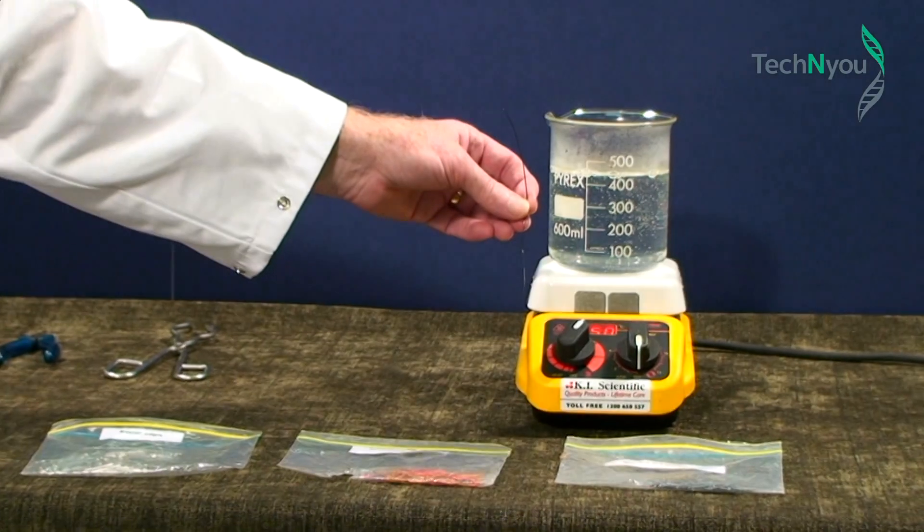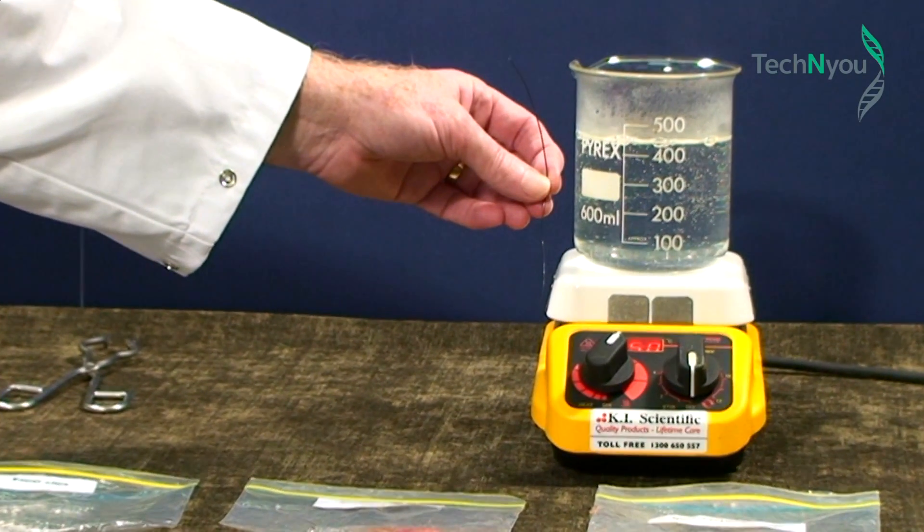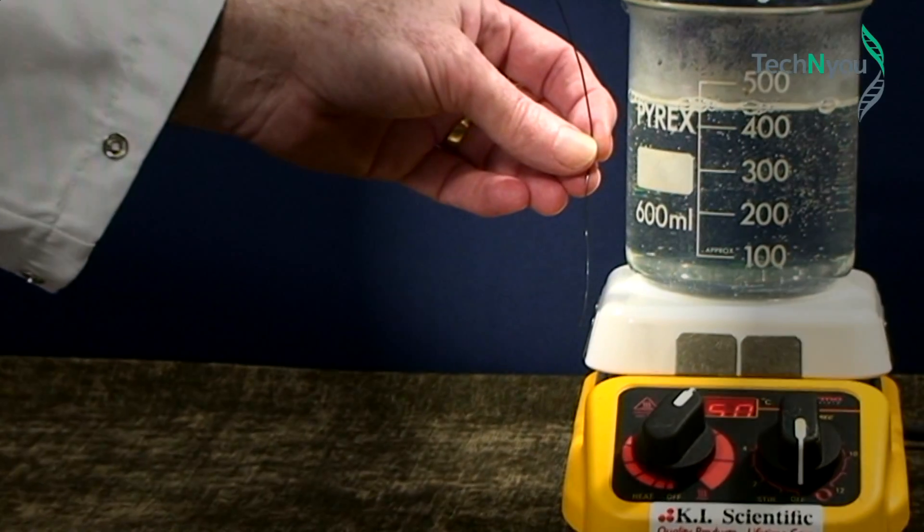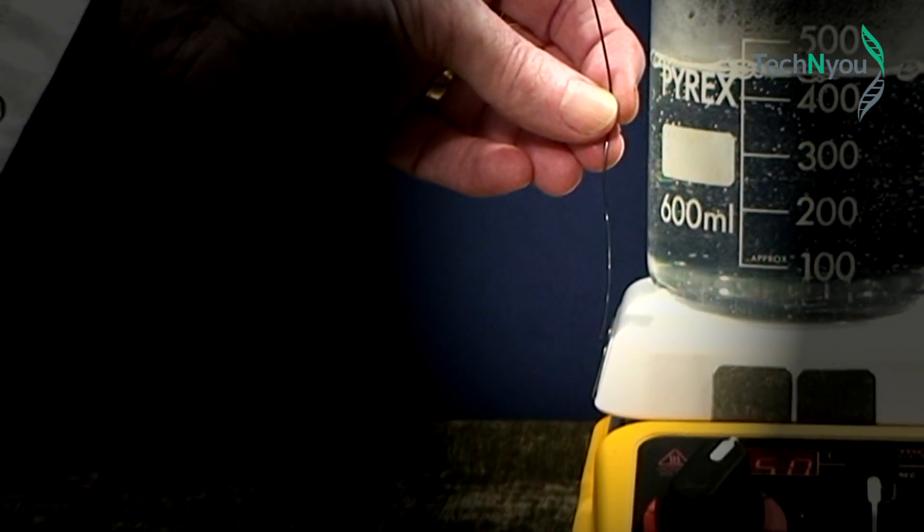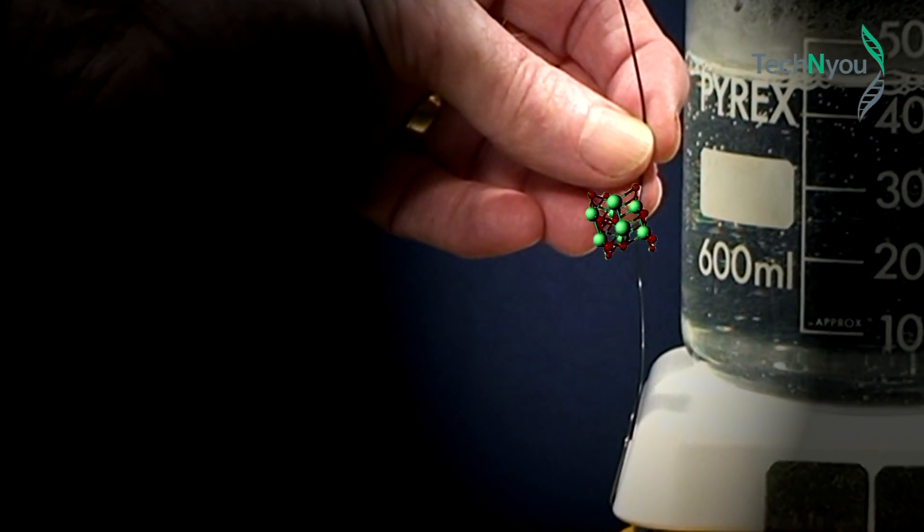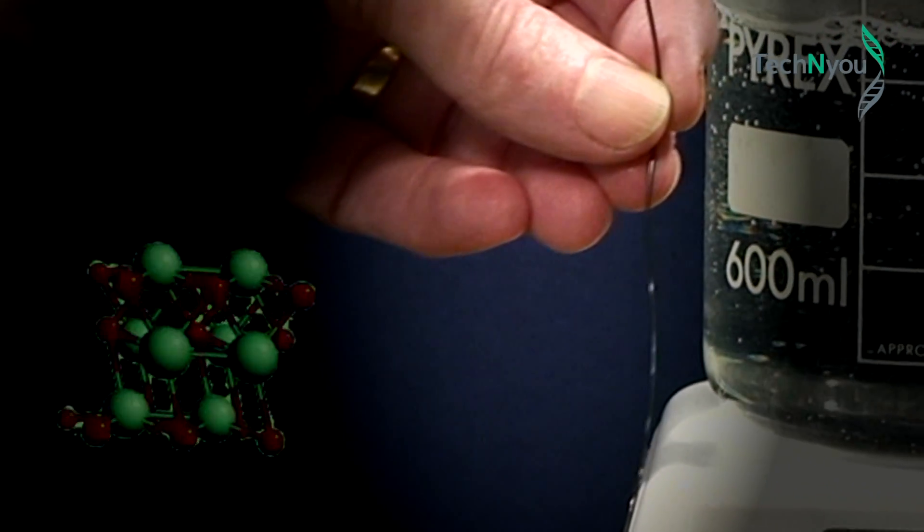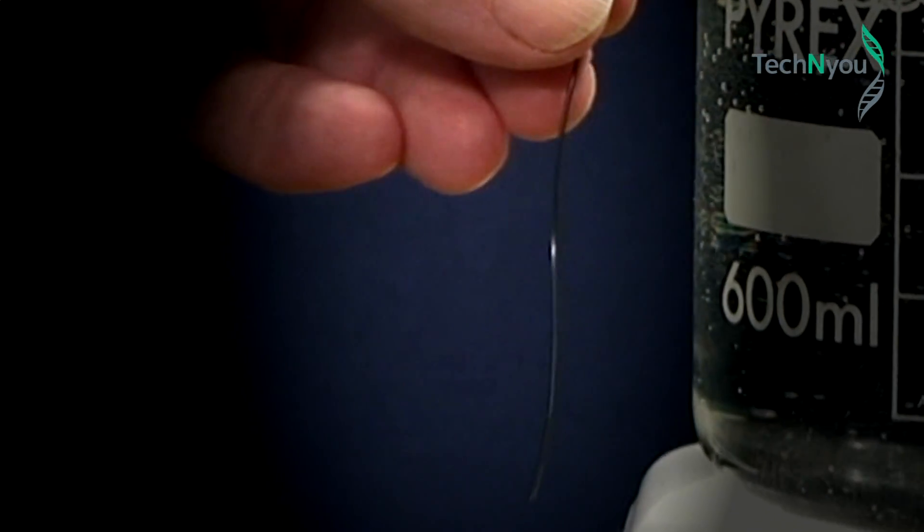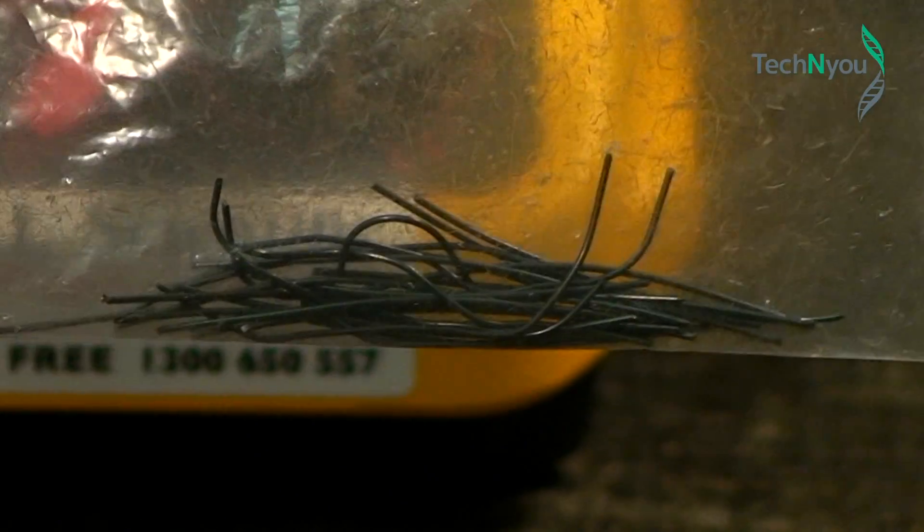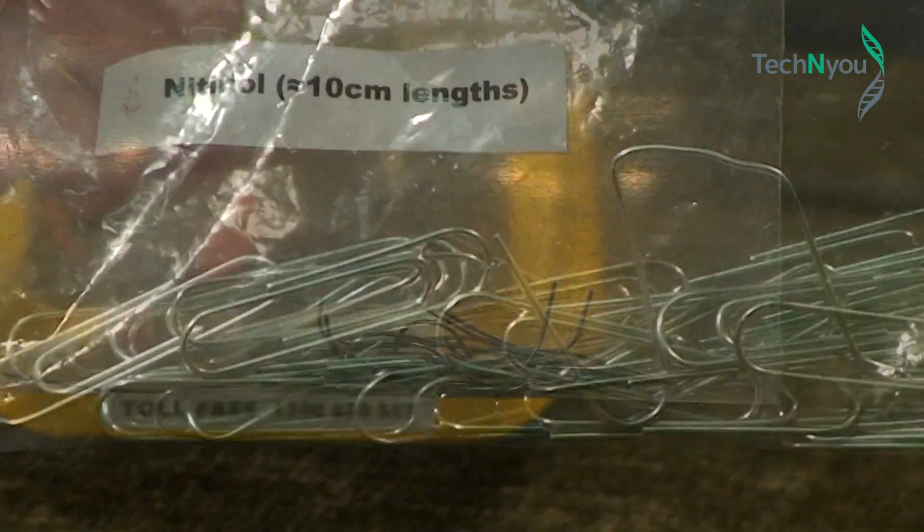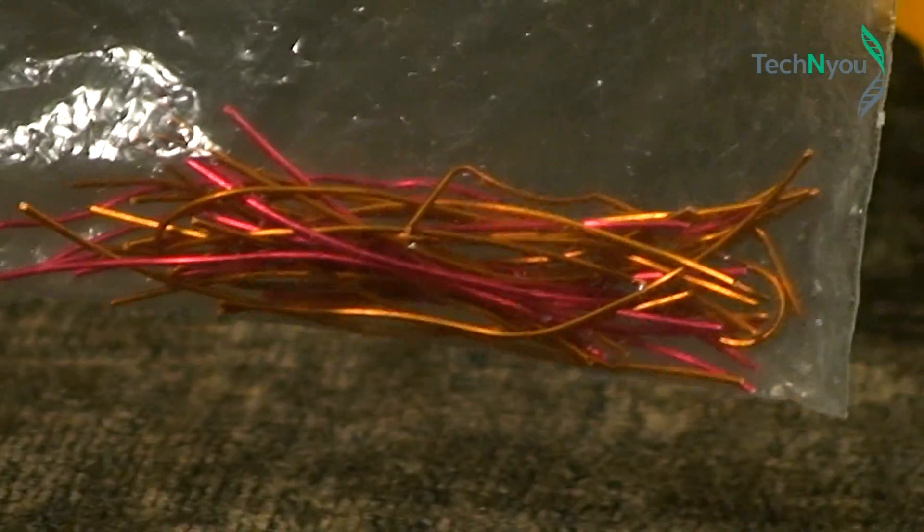This experiment is about shape memory alloys, and this is a shape memory alloy known as Nitinol, which is made from nickel and titanium. In part one of the experiment we will use three different metals: the Nitinol wire, a steel paper clip and copper wire.